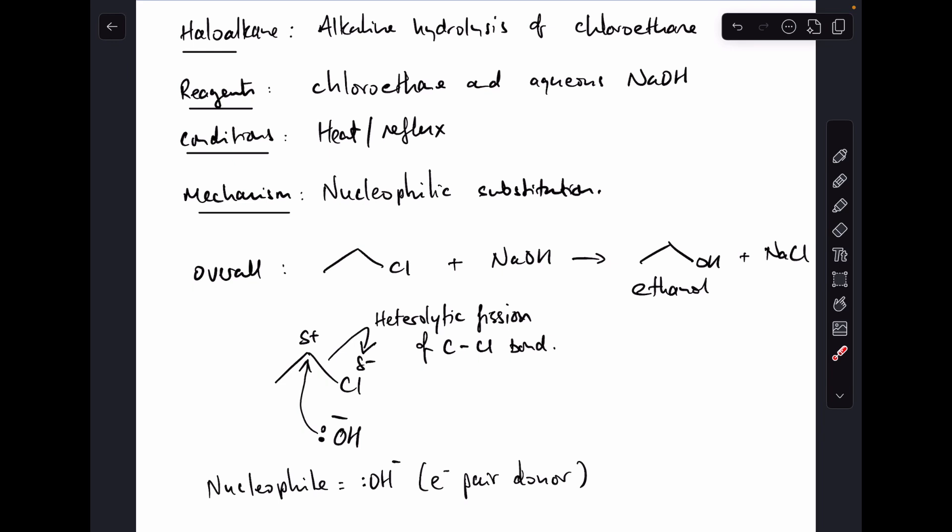It's worth also saying at this point that that bond breaking there is an example of heterolytic fission. So the C-Cl bond has been broken—that's the fission part. Heterolytic: both electrons in the broken bond have gone to the same atom. And then obviously just need to put the products in. So we've got the ethanol there, and we're going to get a chloride ion as well.